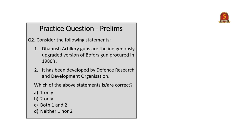The second question is about Dhanush artillery guns, asking for correct statements. Statement 1 — Dhanush artillery guns are the indigenously upgraded version of the Bofors gun procured in the 1980s — is a factual and correct statement. Statement 2 — it has been developed by DRDO — is false, because it was developed by the Ordnance Factory, which comes under the Department of Defence Production. The correct answer is A: 1 only.